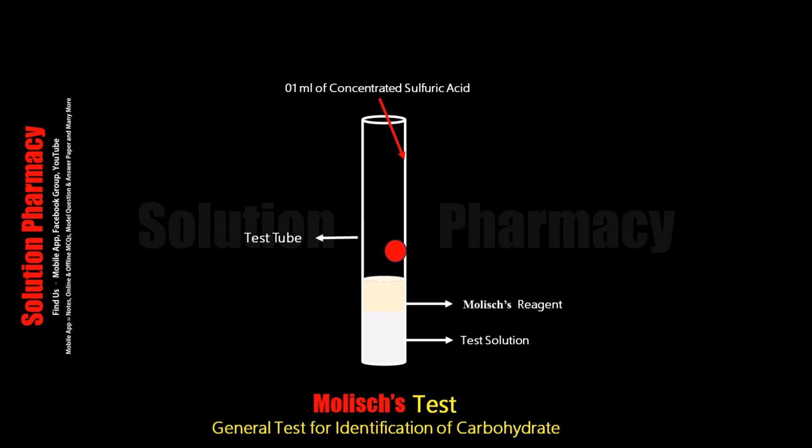Completely transfer 1 ml of concentrated H2SO4 drop by drop into the test tube without disturbing the contents, so that 2 distinct layers form inside the test tube.